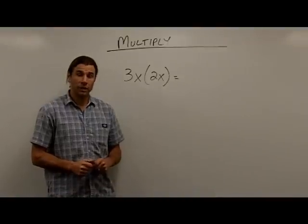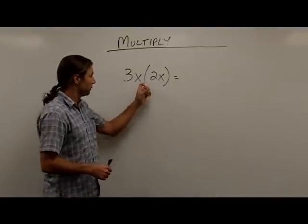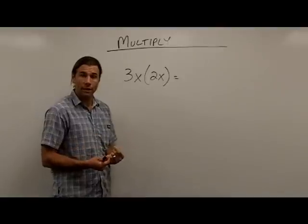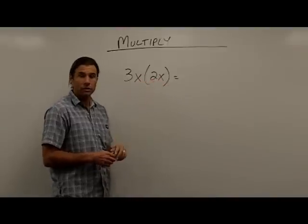So we're also going to use multiplication to simplify terms. And you can see here, I have a multiplication problem. Anytime I write something next to a set of parentheses, it means I'm going to multiply. In this case, I'm going to take this 3x and multiply it by this 2x.